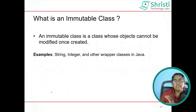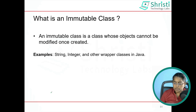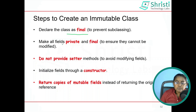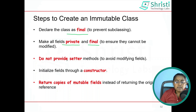Now let us see the steps to create an immutable class. First, declare your class as final. The String class in Java is final, which means you cannot extend the class. Next, make all the fields private — meaning they are not visible outside the class — and these fields should also be final, which means you cannot change the value of the properties once the object is created. Do not provide setter methods, so nobody can assign values using a setter.